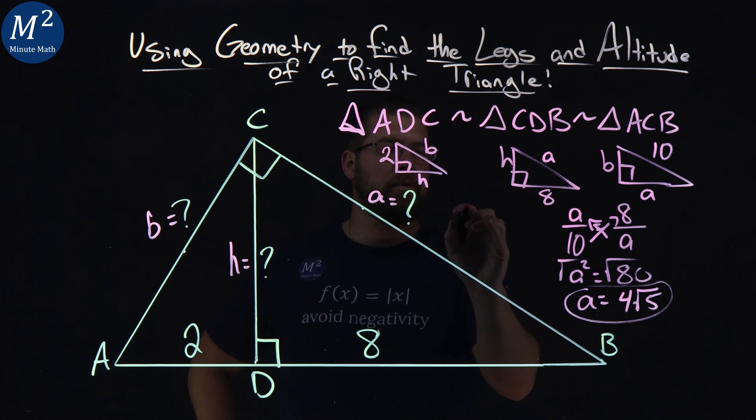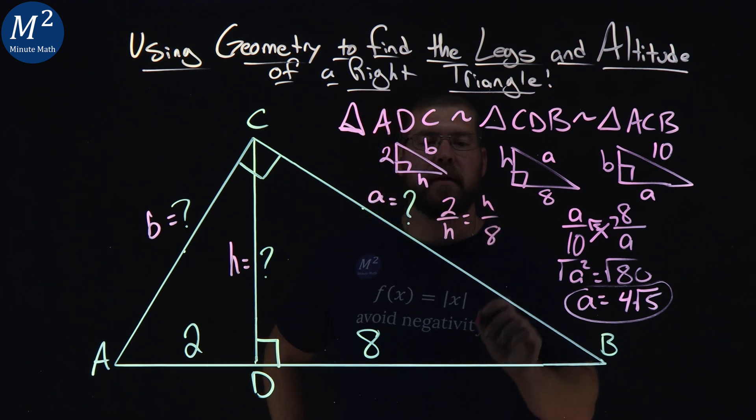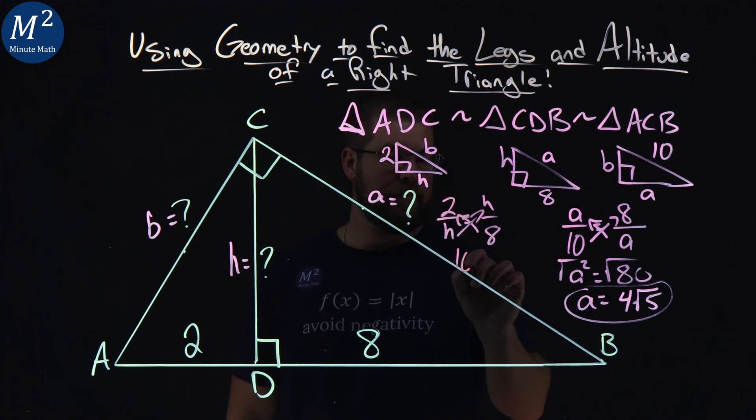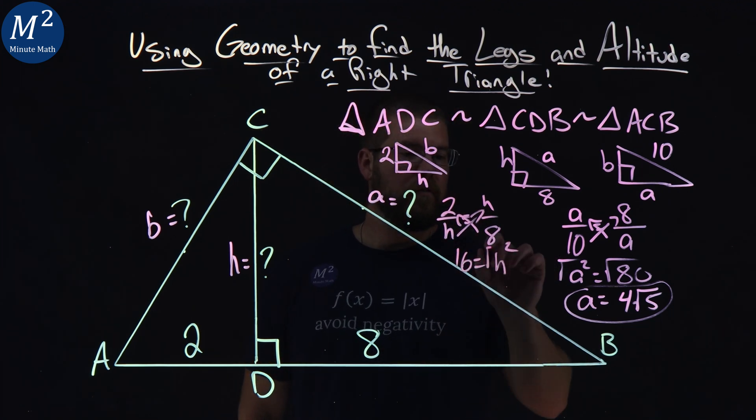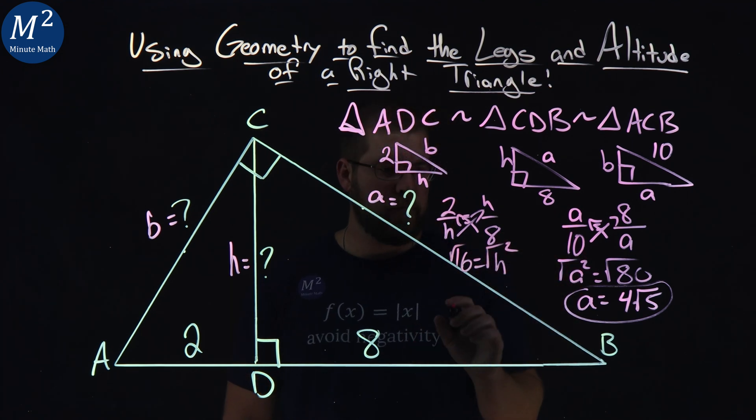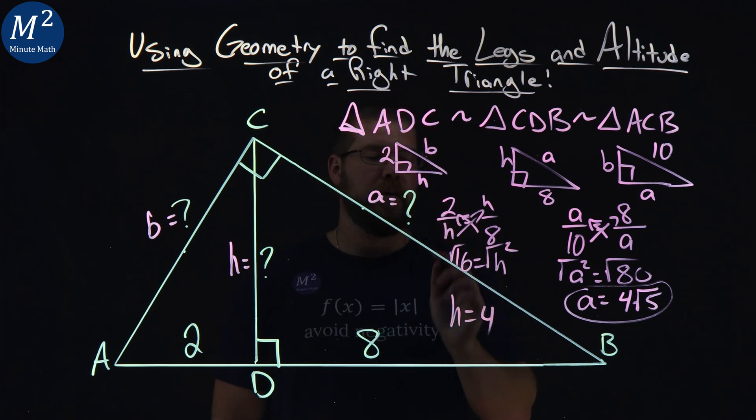So 2 over h equals h over a. 2 times 8 is 16 equals h squared. Square root both sides. Pretty easy here. Square root of 16 is 4. So h is equal to 4. It can't be minus 4. Gotta be positive values.